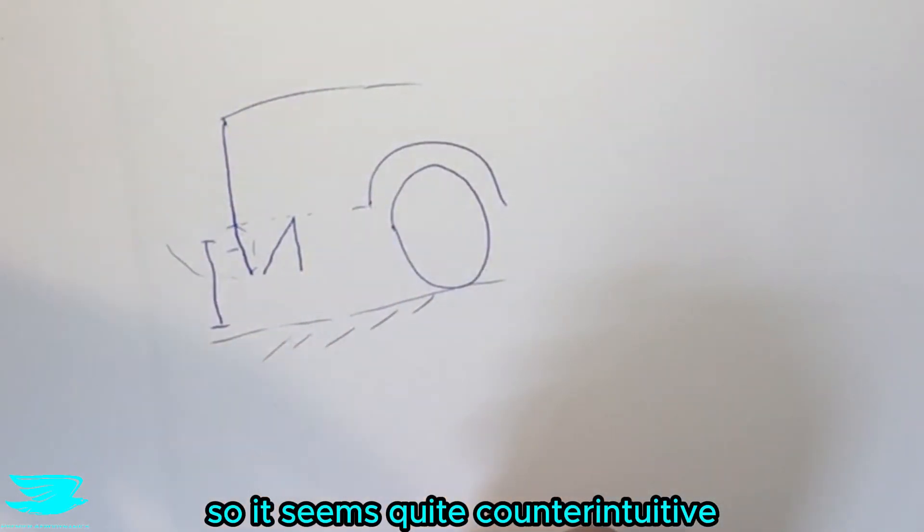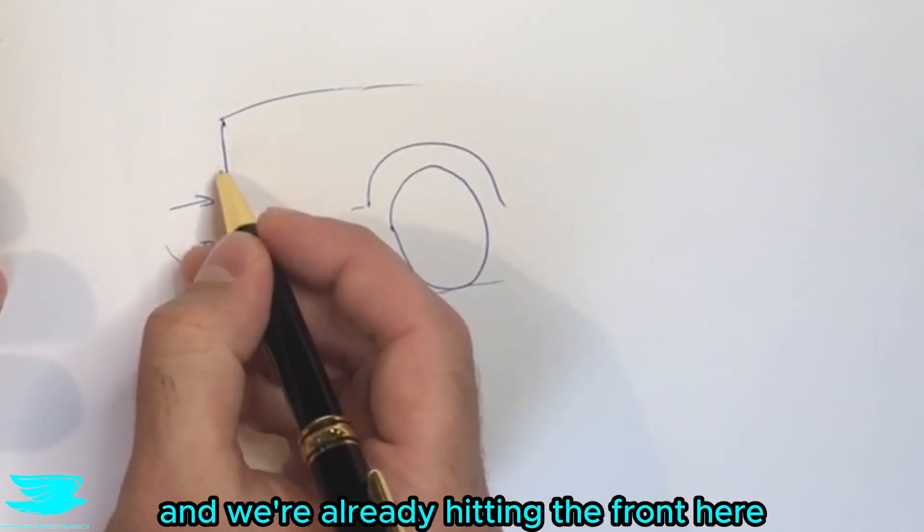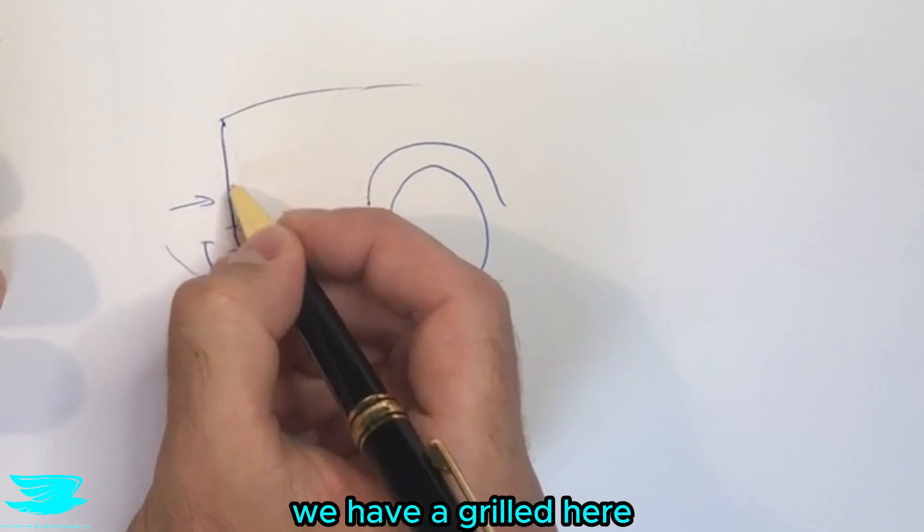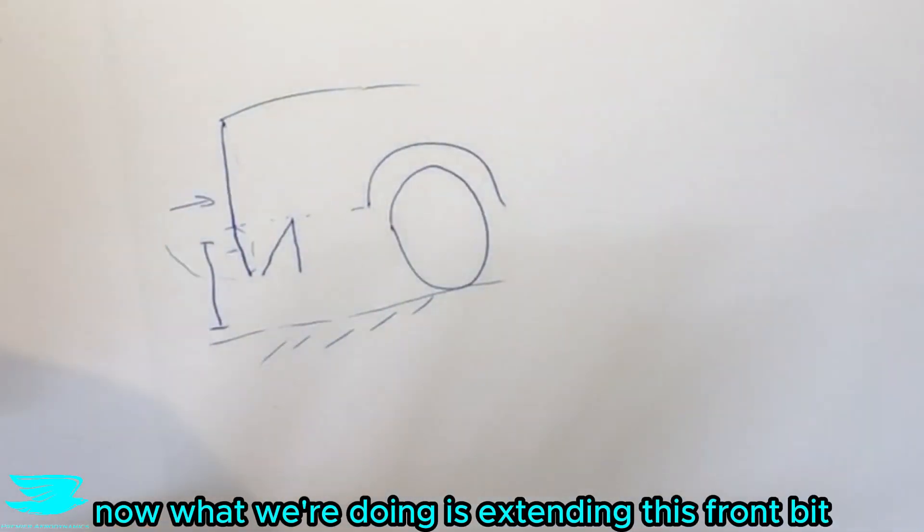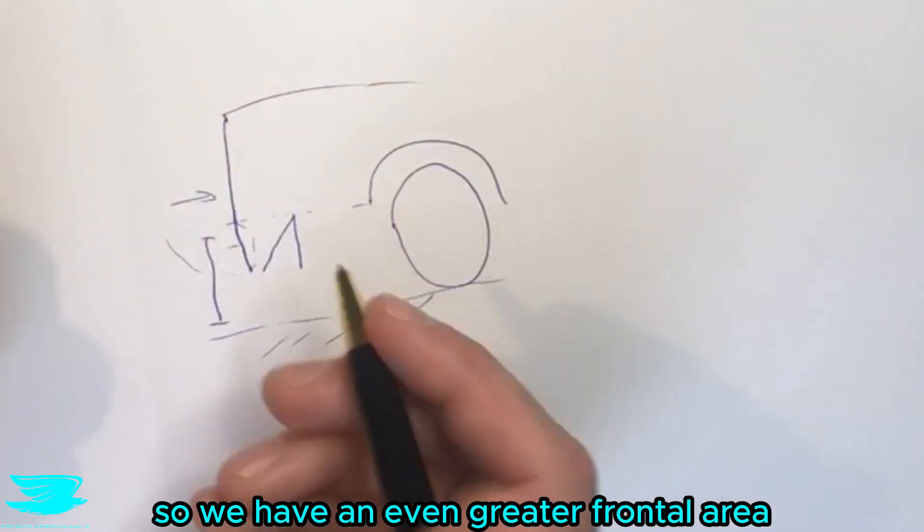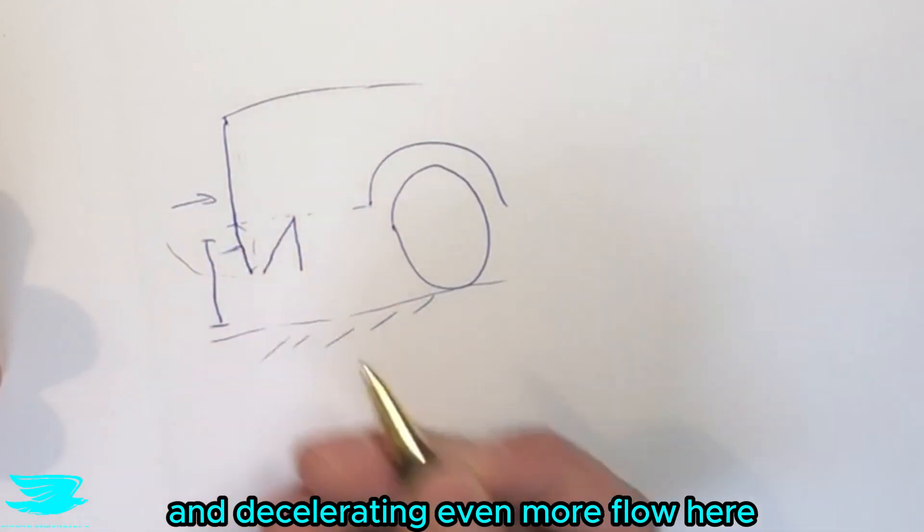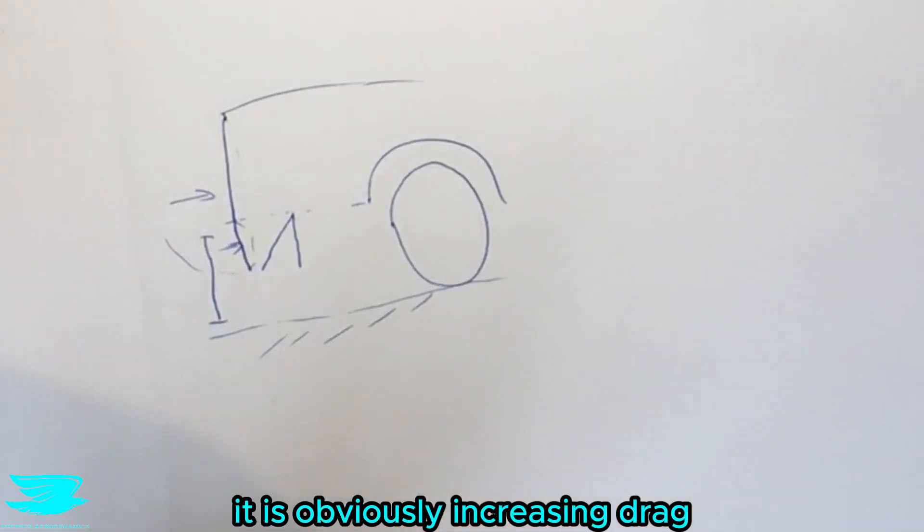So it seems quite counterintuitive why you would make the front bigger because what happens is the flow comes in and we're already hitting the front here. We have a grill here but we still get the flow decelerating a lot which increases the drag. Now what we're doing is extending this front bit so we have an even greater frontal area and decelerating even more flow here. So why would we do this? Why would we put this here? It is obviously increasing drag.